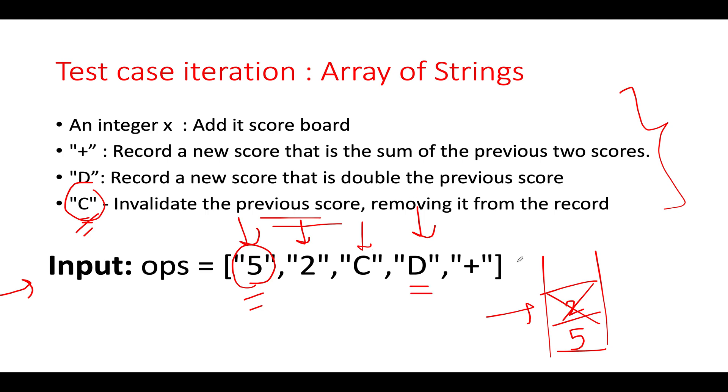Next we see is D. So in case of D, what do you do? You extract the previous score. You pick it up and you double it up and create a new score. So five into two is 10. So what I'm going to do, I'm going to add 10 to my stack. Now it has two elements five and 10.